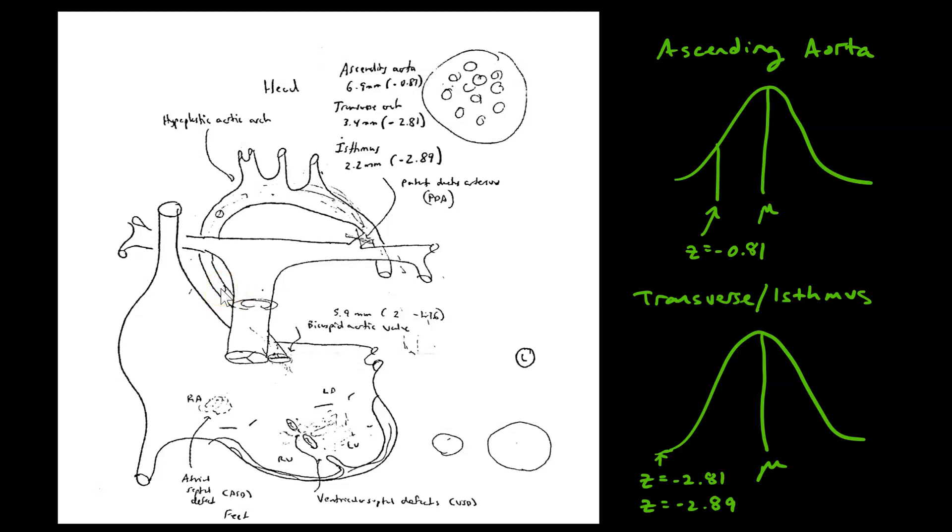We also talked about the empirical rule where 95% of people or 95% of data will be within two standard deviations of the mean.